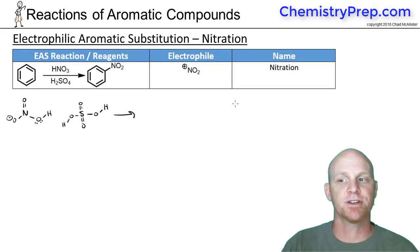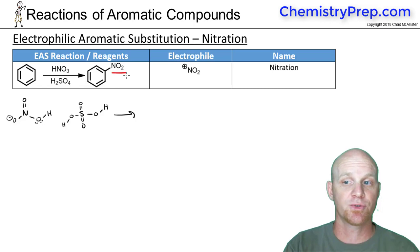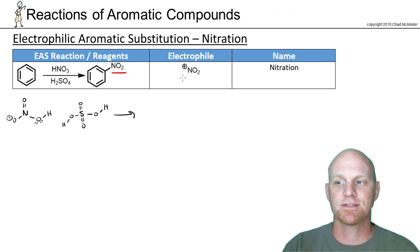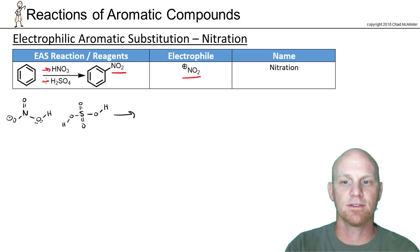So this next reaction is called nitration, and we're going to add this nitro group onto a benzene ring, replace a hydrogen. And you can see the electrophilic species here is NO2+, which is definitely not one of the reagents. We have to make it in situ again.